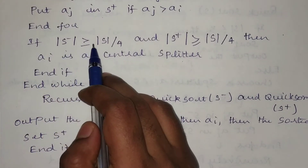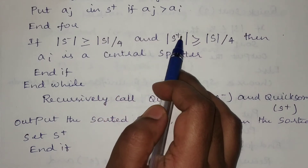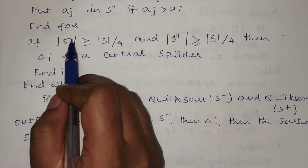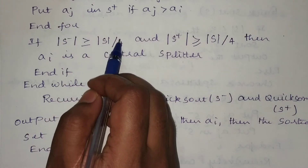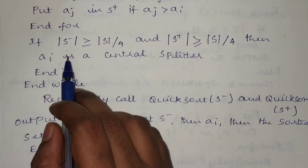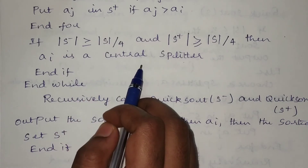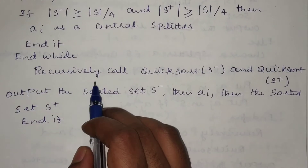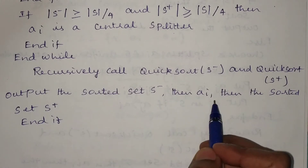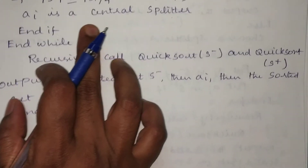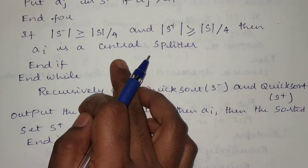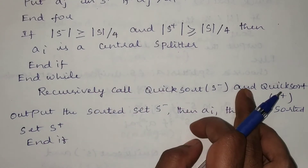One additional statement is included in the modified quicksort: if |S⁻| ≥ |S|/4 and |S⁺| ≥ |S|/4, then ai is a central splitter. If both conditions are satisfied, the selected ai is a good central splitter. Otherwise, the loop repeats. Once a central splitter is found, recursively call quicksort on S⁻ and S⁺, and output the sorted set S⁻, then ai, then the sorted set S⁺.